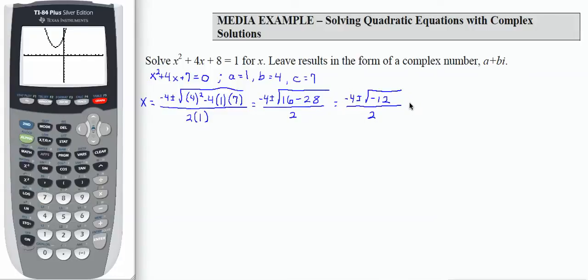Now I'm going to break up that square root. The first thing I'm going to do is remove the square root of negative 1 from the square root of negative 12. This piece right here equals i. So I now have negative 4 plus or minus i times the square root of 12, all divided by 2. Remember i is the square root of negative 1.